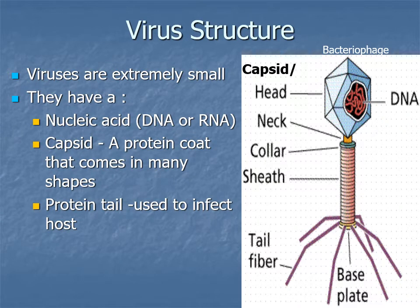Viruses are very, very small. Bacteria are tiny compared to us, and a virus is tiny compared to bacteria, so these things are super small — you basically need an electron microscope to see them. That's how they trick their way through our proteins, because they're so tiny and because of the shape they have.